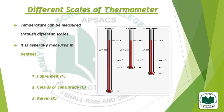Now we will discuss the different scales of thermometer. Temperature can be measured through different scales; it is generally measured in degrees. The first common scale is Fahrenheit, the second is Celsius or centigrade, and the third scale is Kelvin. In this diagram we can see these three types of scales of thermometers. The degrees mentioned over these scales are different from each other. The most common scale used is Celsius or centigrade.